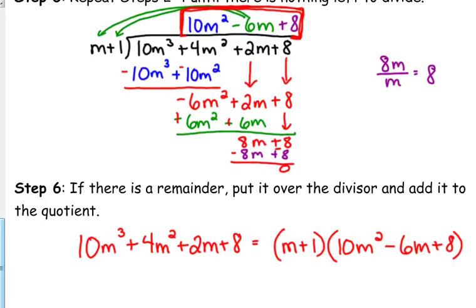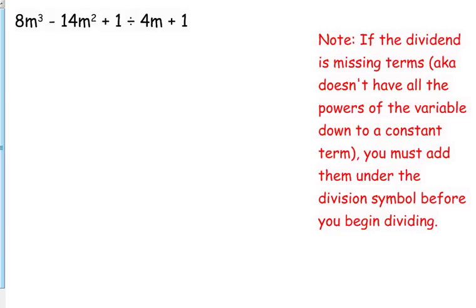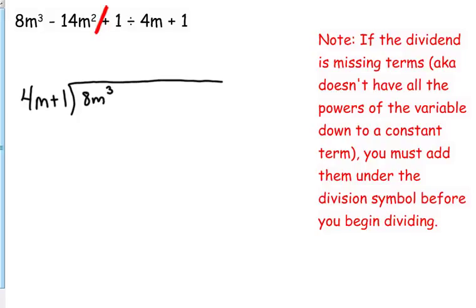Let's do a couple more examples. The next one is 8m cubed minus 13m squared plus 1 — the same problem we had earlier with synthetic division. We are missing our linear term; our plain m is missing, so we've got to put a placeholder in. So 4m plus 1 is going into 8m cubed minus 14m squared plus 0m plus 1.